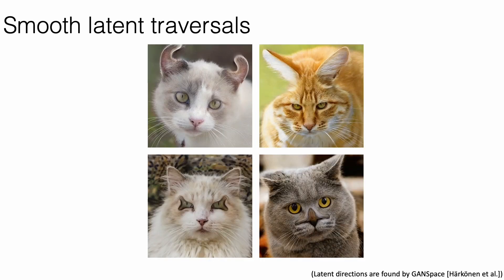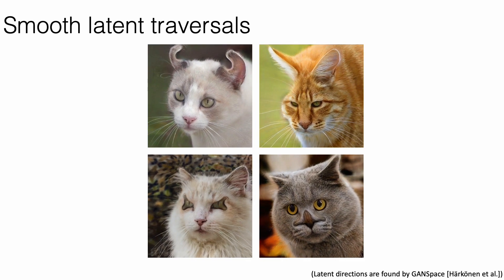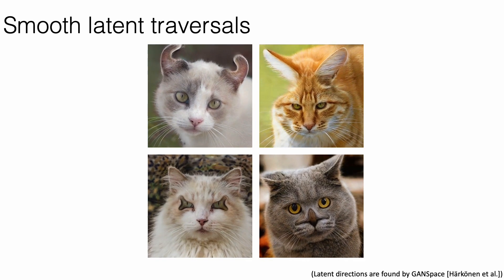Our method produces models that can apply smooth manipulations to images. Here, we use GAN-based latent manipulations to change the pose of each cat. We can see that the pose changes work well with the warped shape, and allow us to see what our warped creatures look like from a different angle.